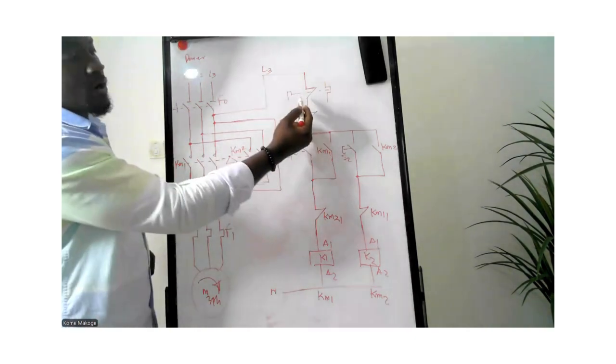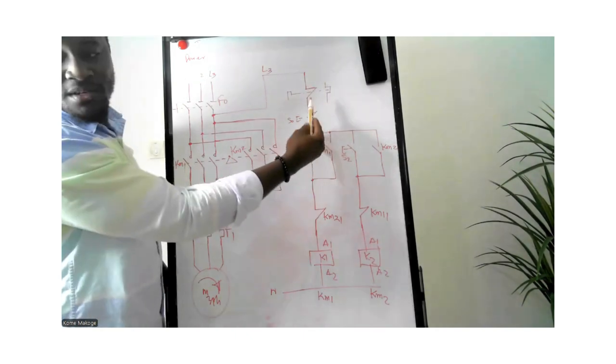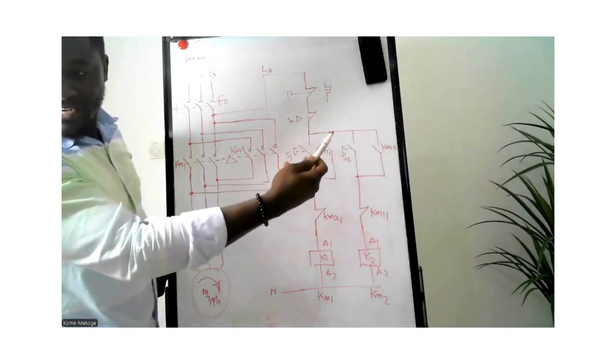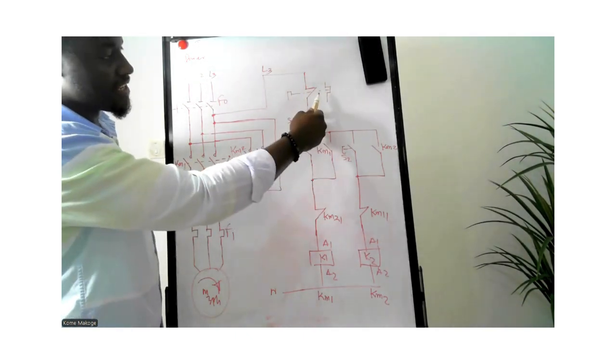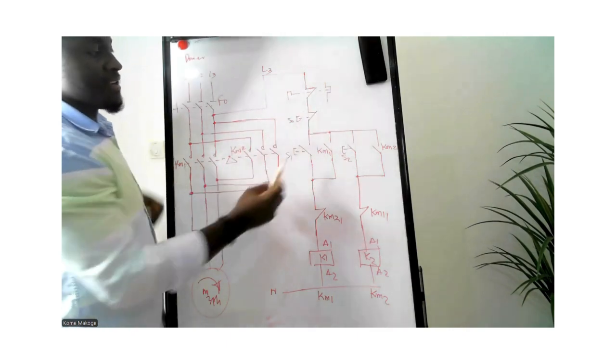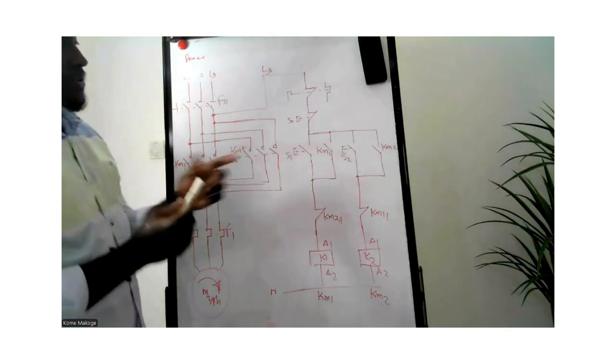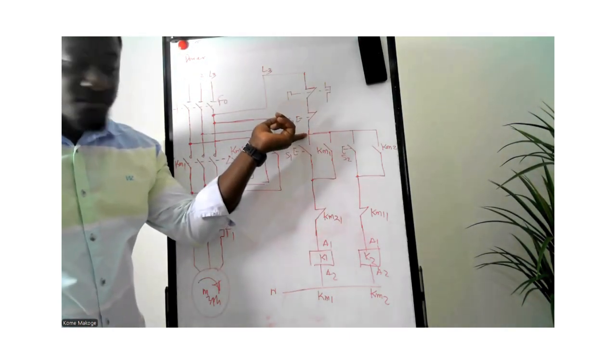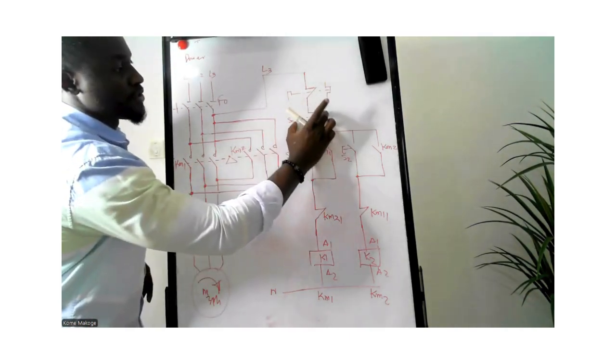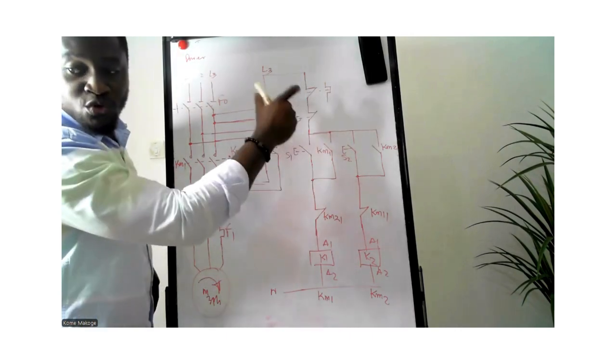We start from the top. This is our thermal relay, as you can see, the same way that we had on the direct online starter. The next is a close contact which is a push button, the stop push button. We represent it as a close contact.